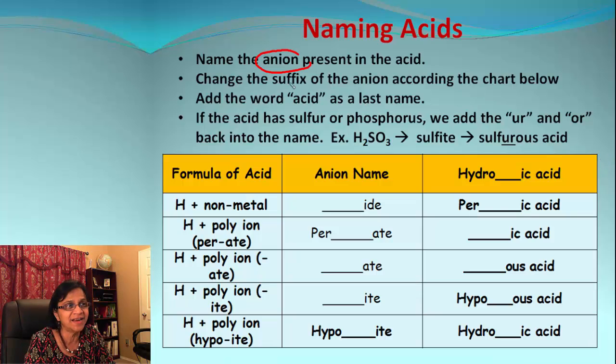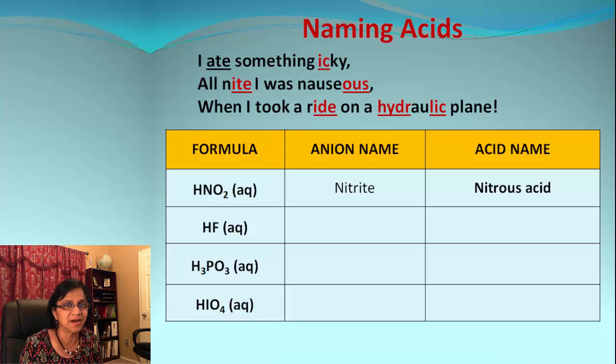Once you find out the anion, we can find out the suffix. For example, if you have a nonmetal as anion we're going to follow this pathway. If it's a polyion like -ate or -ite or hypo-ite, we follow the definitions given in the table. But let me tell you there is a much easier method to name the acids.